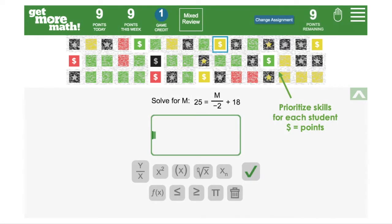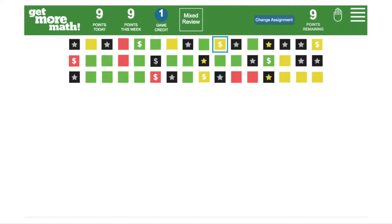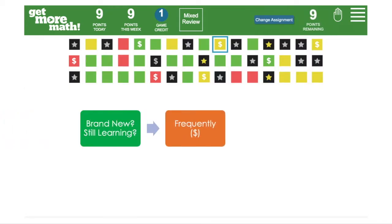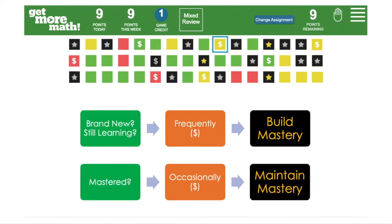In mixed review, Get More Math prioritizes the practice for each student by placing a dollar sign on the problems that a student needs to practice. For those concepts that are brand new or students are still learning, Get More Math frequently places a dollar sign on those skills so students build mastery. On those skills that students have mastered, Get More Math still occasionally places the dollar sign on those skills so that students maintain mastery over time.